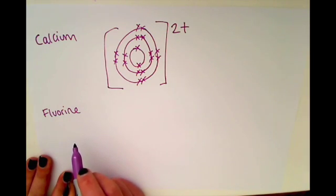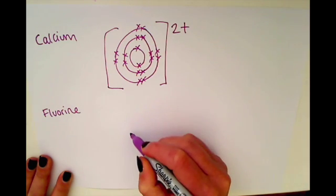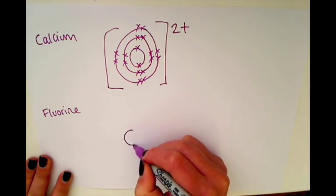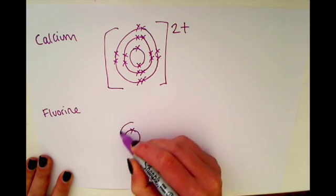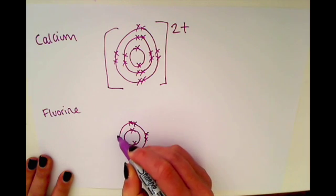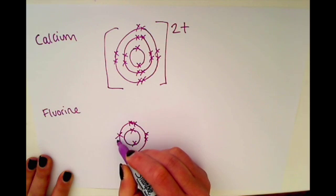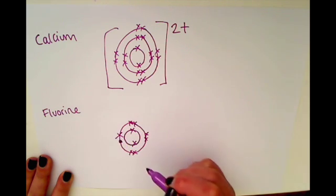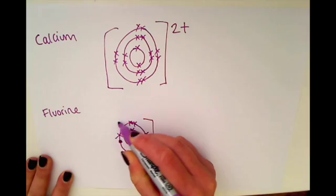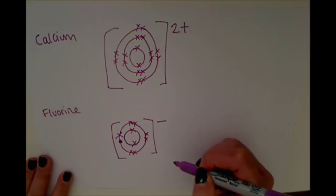Fluorine, on the other hand, is in group seven, so it is a halogen. Because it's in group seven it needs to gain one electron for a full outer shell. As an atom it has nine electrons, but it's going to gain an extra electron to have a full outer shell of eight. Because it's gained a negative charge it becomes a minus ion.